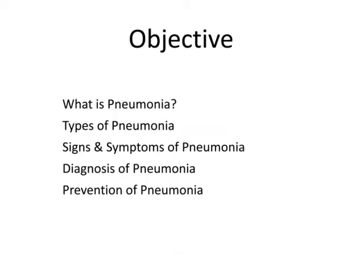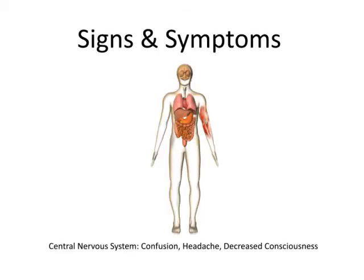Let's see how pneumonia manifests itself — that is, what symptoms make us feel that we have pneumonia. Pneumonia affects many parts of our body such as the brain, lungs and muscles. In the central nervous system, pneumonia causes symptoms such as confusion, headache, and a decreased level of consciousness in elderly patients.